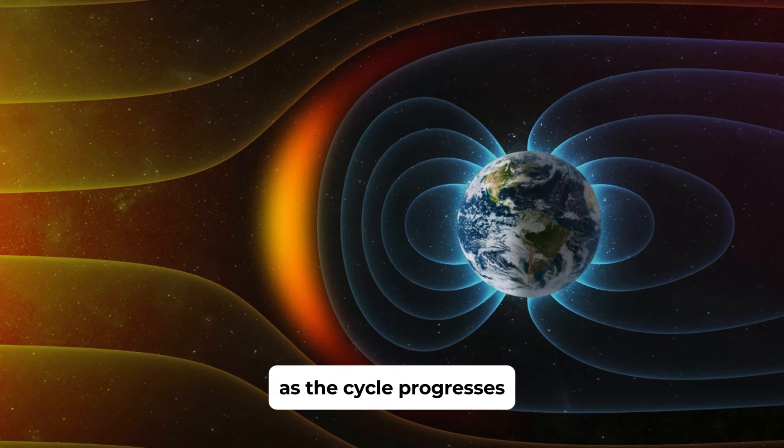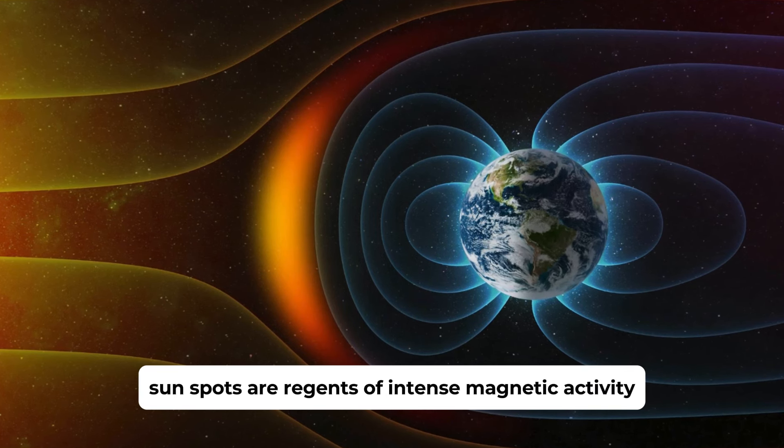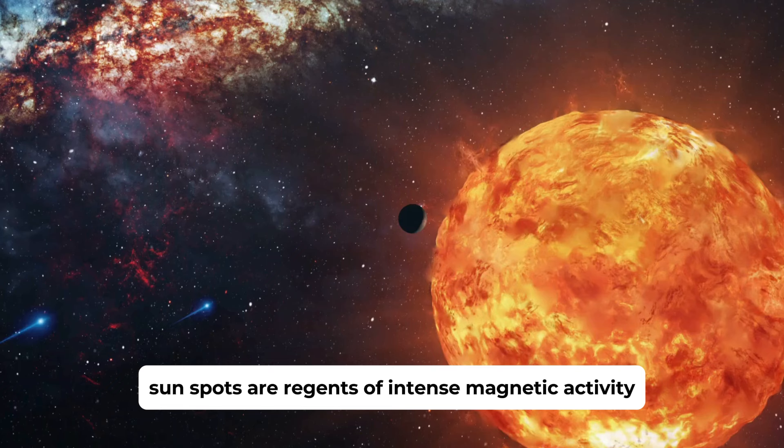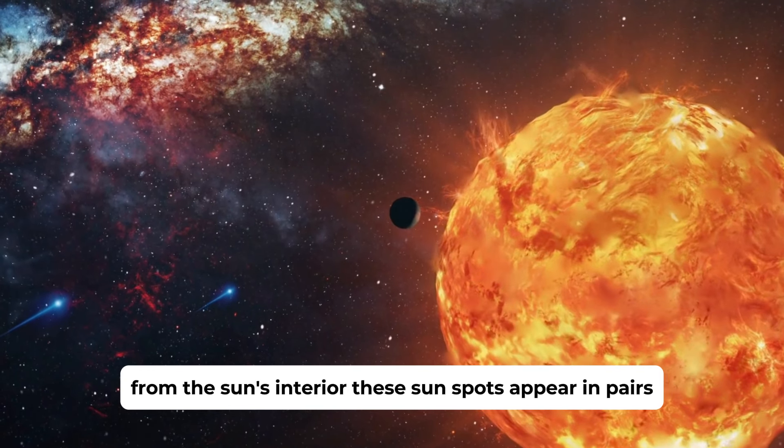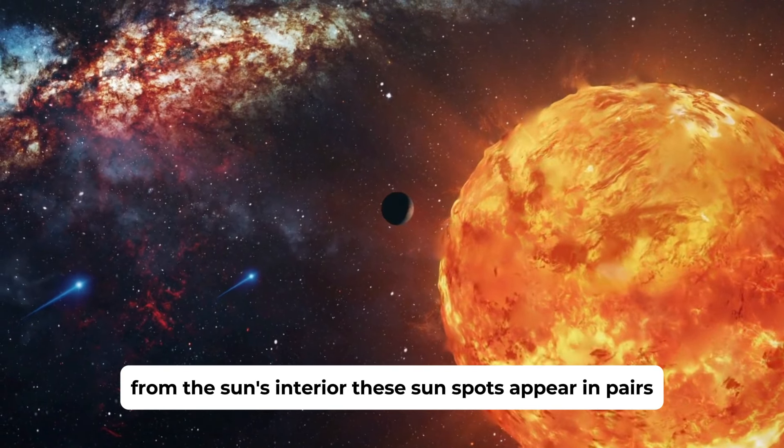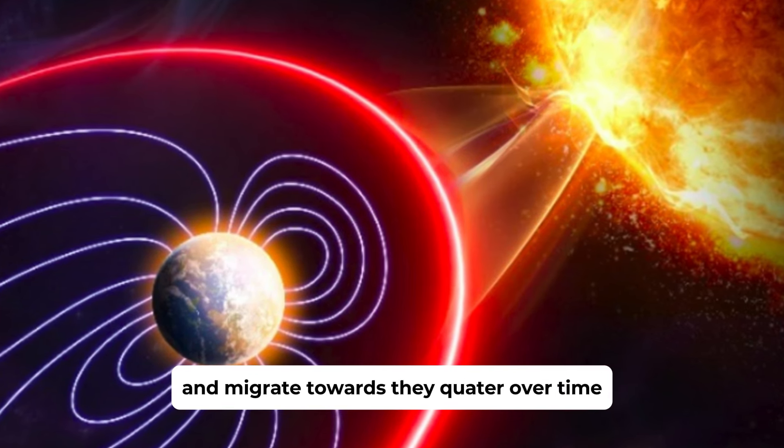As the cycle progresses, the number of sunspots increases. Sunspots are regions of intense magnetic activity and are associated with the emergence of magnetic flux from the Sun's interior. These sunspots appear in pairs with opposite magnetic polarity and migrate towards the equator over time.